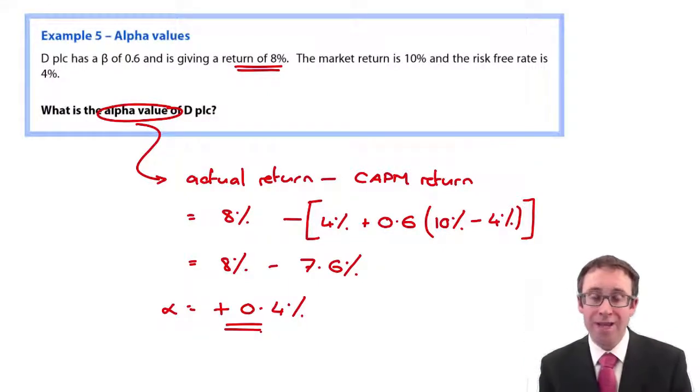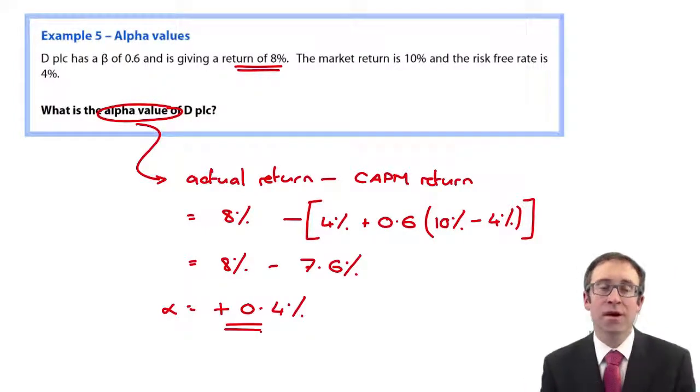Then therefore, 8 less 9 is minus 1. And therefore, that's a negative alpha value. So we would expect to sell that investment.